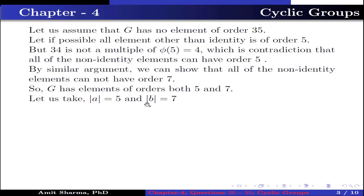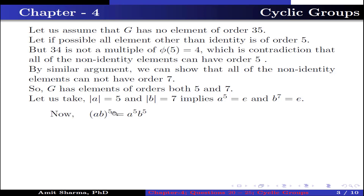Let order of a be 5 and order of b be 7. This implies a to the power 5 equals identity and b to the power 7 equals identity. Now (ab) to the power 5 equals a to the power 5 times b to the power 5, because G is abelian, which equals e times b to the power 5, which equals b to the power 5, which is not equal to identity.